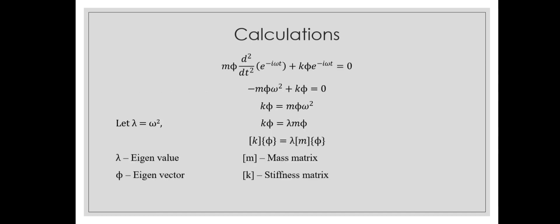Plugging the solution in and performing the calculations, we end up with k phi equals m phi times omega squared. We call omega squared equals lambda, plug that in, and we can see that k and m are matrices — k is the stiffness matrix, m is the mass matrix, phi is the eigenvector, and lambda is the eigenvalue, which is a scalar.